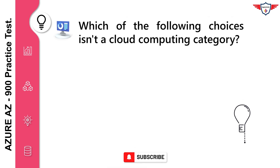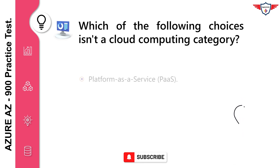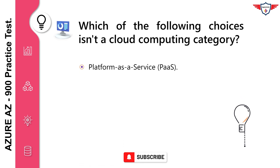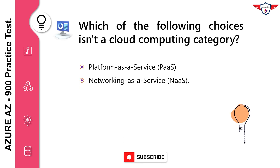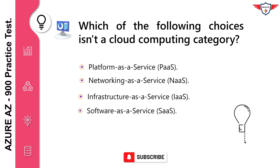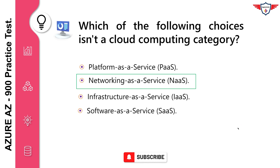Which of the following choices isn't a cloud computing category? The correct answer is networking-as-a-service. Networking-as-a-service isn't a cloud computing category.